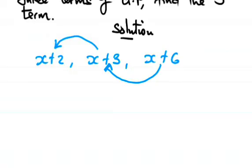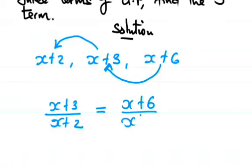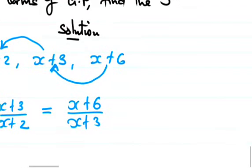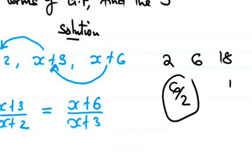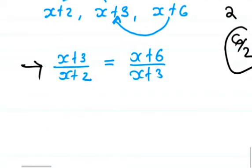So we can write that as x plus 3 divided by x plus 2 equals x plus 6 divided by x plus 3. That's what I've done here. Now let's just do cross multiplication.